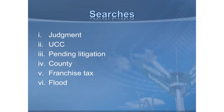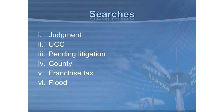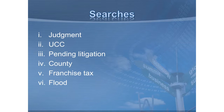Some of the typical searches done are your judgment searches, UCC searches, and pending litigation. Pending litigation is really important, particularly with high-risk industries. We always do those in business acquisitions as well as certain industries such as restaurants, hotels, liquor stores, and bars. We'll always do a pending litigation search. You also have to really know your jurisdiction — where judgments are filed, where you file your UCCs, and whether certain rules apply such as franchise tax considerations.